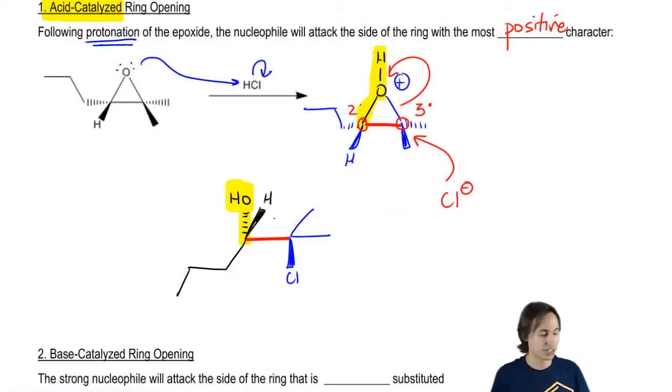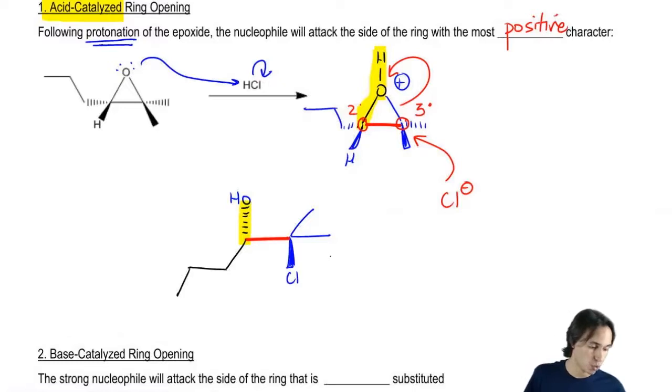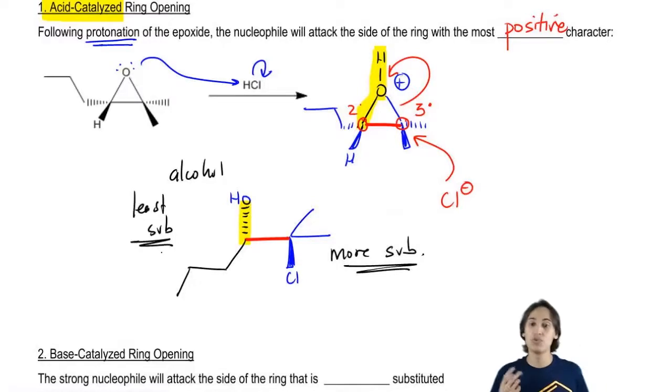Obviously you don't need to draw H's. At the end of the day, I could have just drawn this without the H. Notice what my product is here: I'm going to get a nucleophile attaching to the more substituted position and an alcohol at the least substituted position. This is unique to acid-catalyzed ring opening. Base-catalyzed ring opening is actually going to be different.